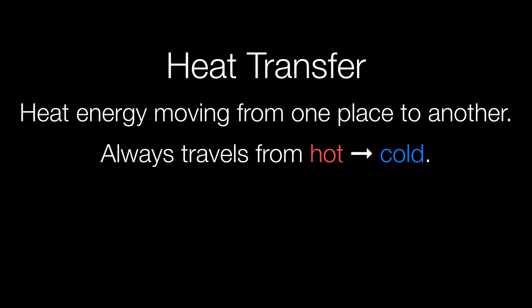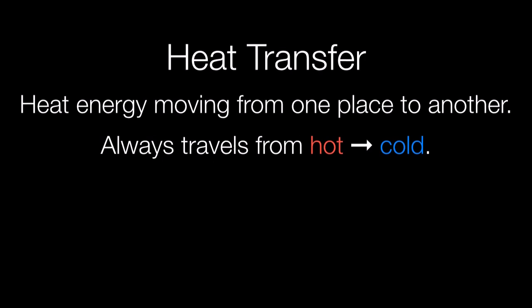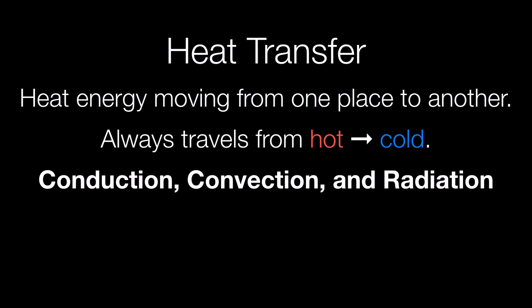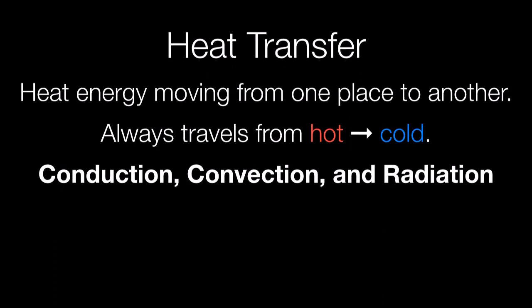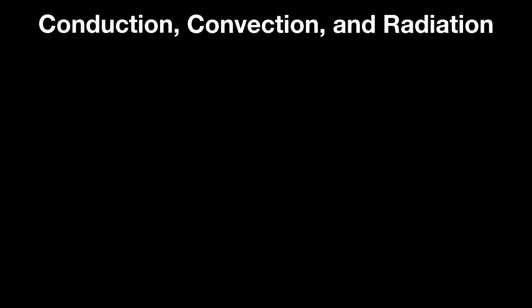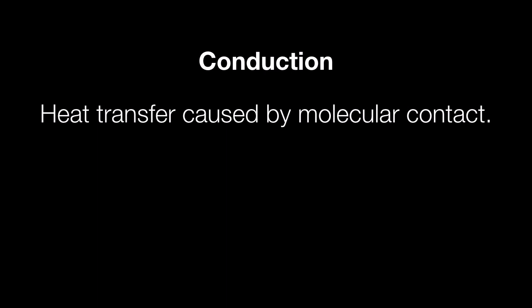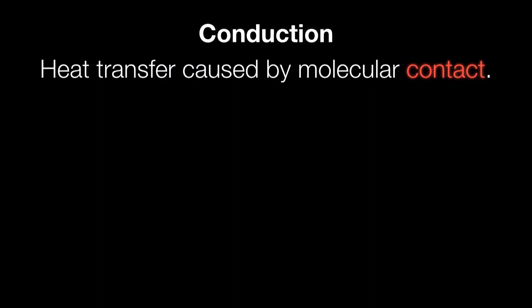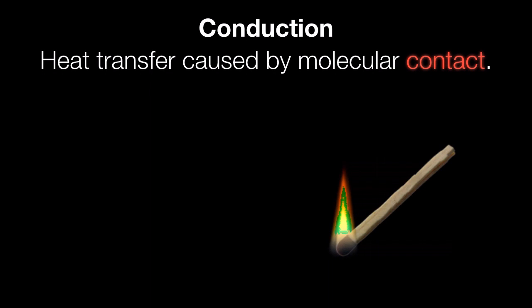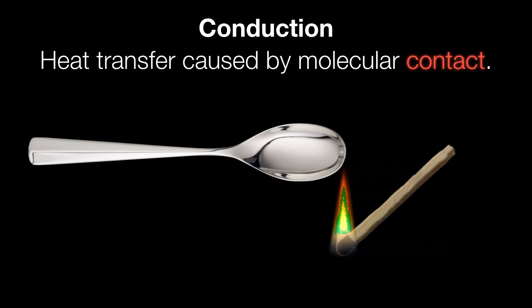How does it do that? There are three methods of heat transfer: conduction, convection, and radiation. Let's take a look at each one and how exactly they work, starting with conduction. Conduction is heat transfer caused by molecular contact, and that word contact is going to be your key word for conduction. For example, let's take a flame producing heat energy and bring a metal spoon and hold it over that flame.